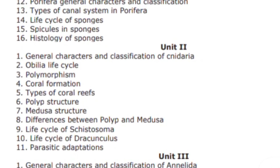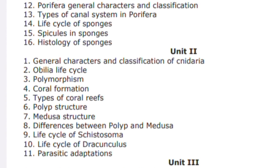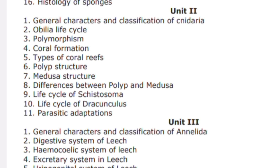From unit number one, there are 16 questions — try to learn all of them. From unit number two, there are questions on coral formation, types of coral reefs, and the life cycle topics. Also general characters and classification of Cnidaria — these are all the important questions from unit number two.